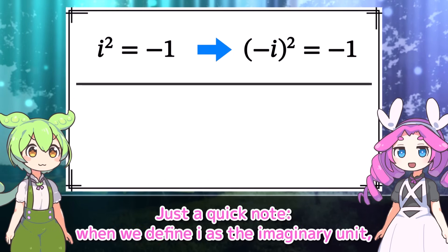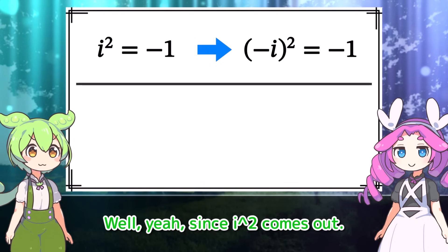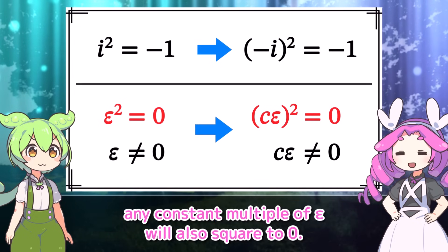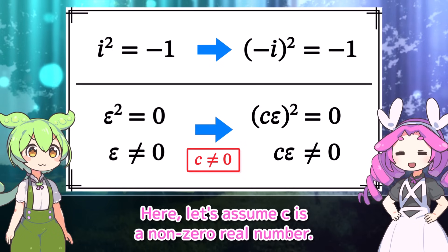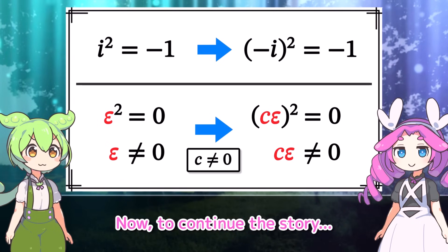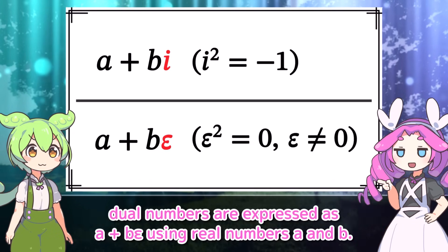Just a quick note: when we define i as the imaginary unit, negative i also squares to negative 1. Similarly, since epsilon squared equals 0, any constant multiple of epsilon will also square to 0. Here, let's assume c is a non-zero real number, so c epsilon shares the same properties as epsilon. Just like complex numbers are expressed as a plus bi using real numbers a and b, dual numbers are expressed as a plus b epsilon using real numbers a and b.